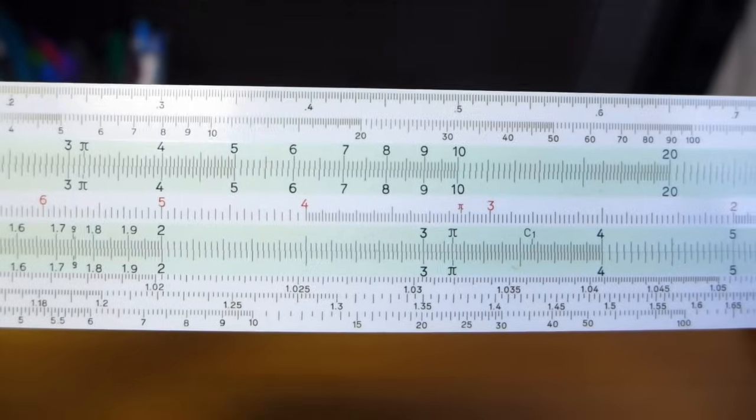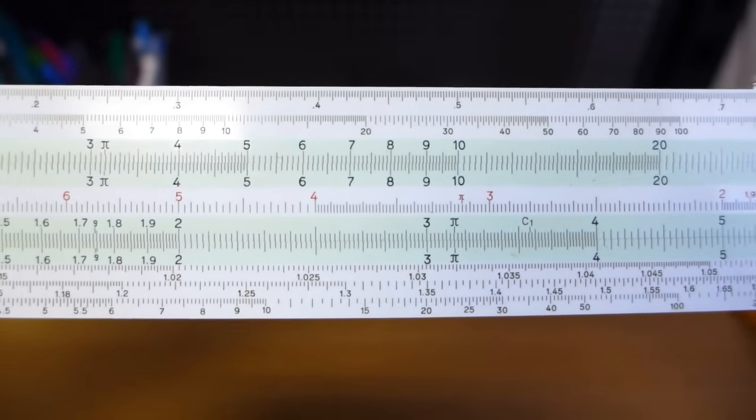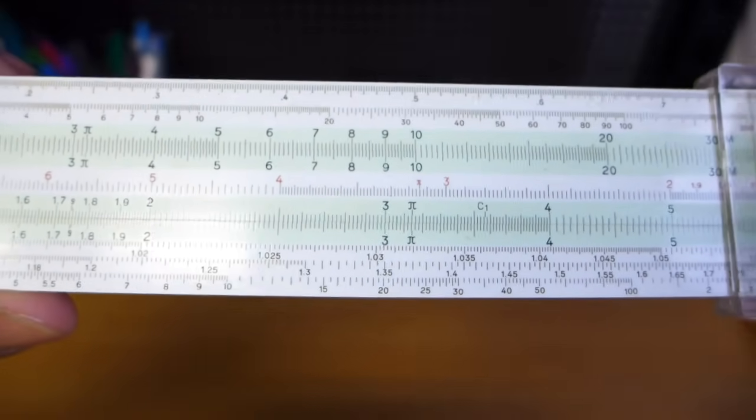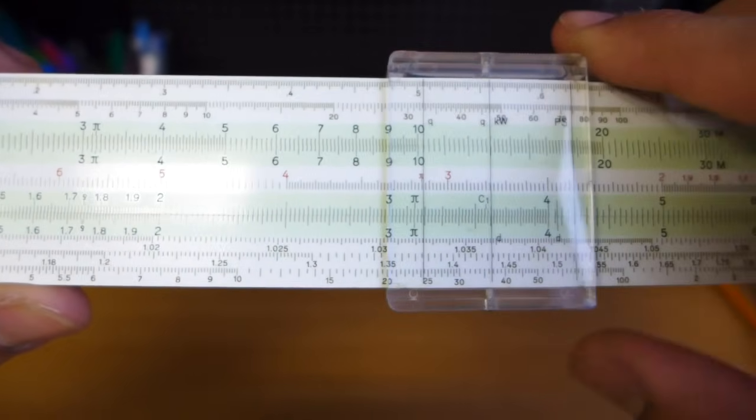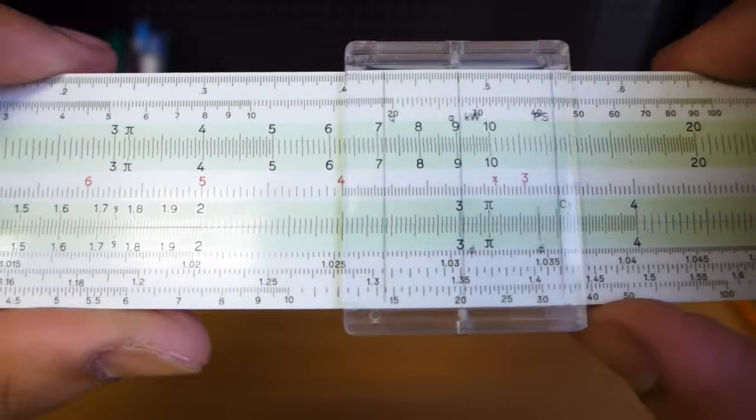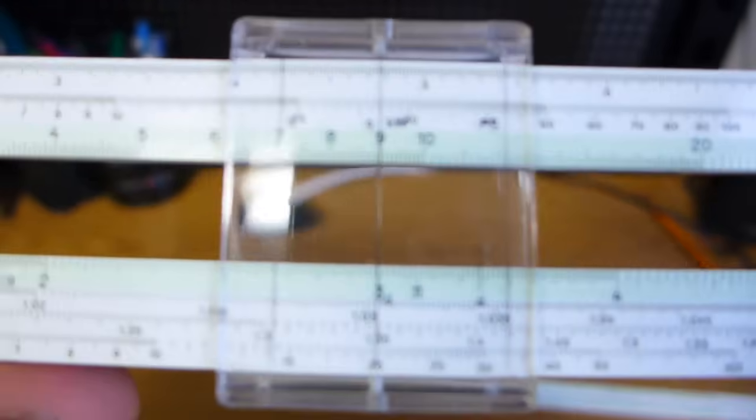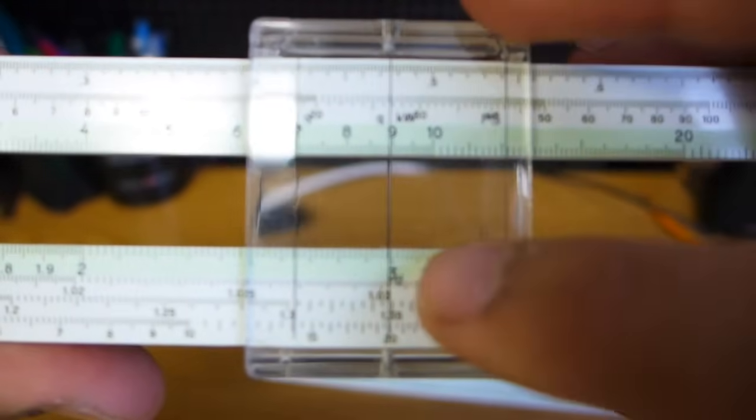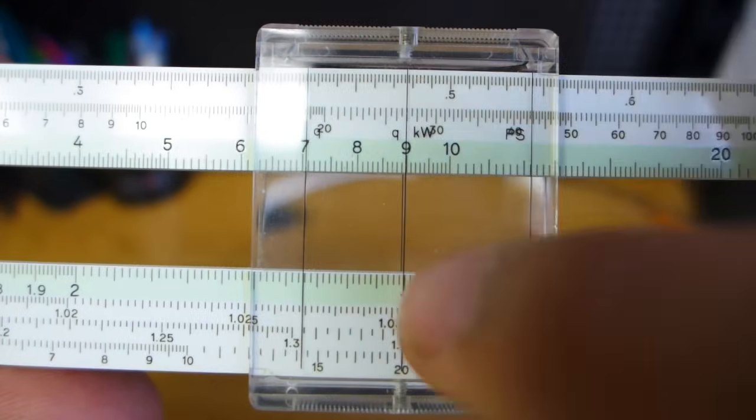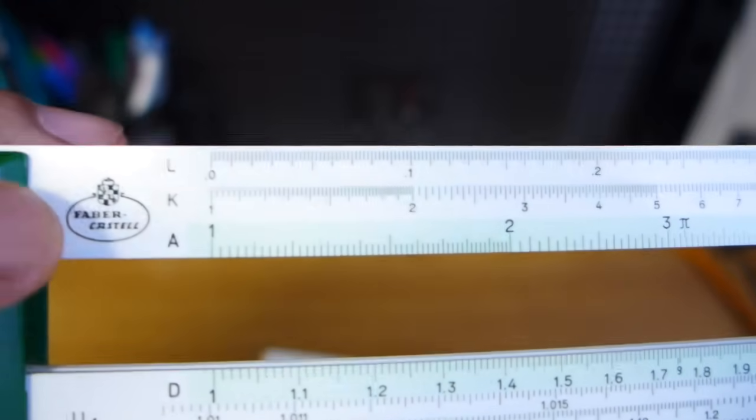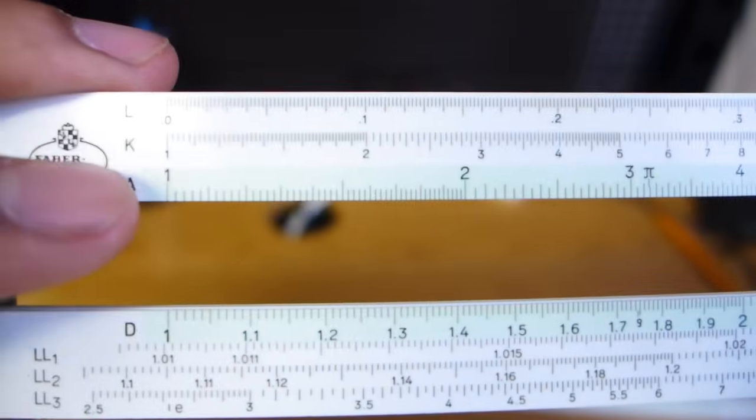Squaring and cubing is pretty simple as well. All you have to do is, you don't have to slide the thing at all. You set the number you want to square on the bottom scale. So say for example, I want to square 3. So I set to 3. I can actually take this out completely. So I want to square 3. So I take 3, and I read the answer 9 off of the A scale. We're on the D scale, we read off the A scale.